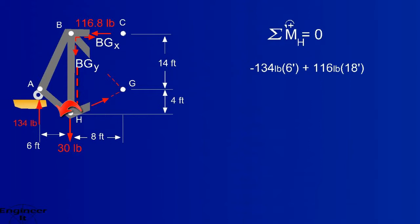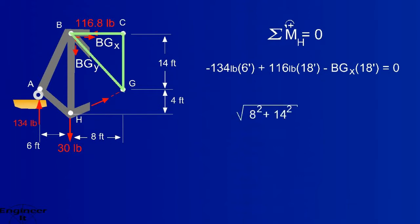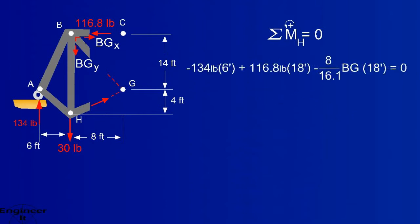When force BG is near point B, force BGY has its line of action very near point H. And force BGX is very near point B, so it has a lever arm of 18 feet. To solve directly for force BG, ratios would be of great use here. Relate the forces to the geometry of member BG. Substitute for BGX and solve for force BG.